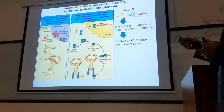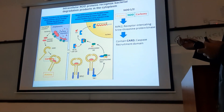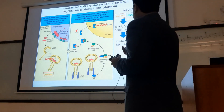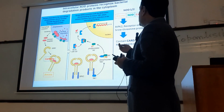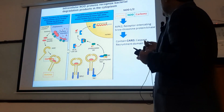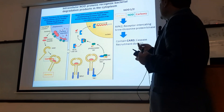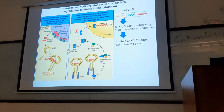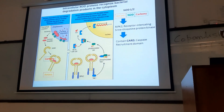NOD1 and NOD2 receptors have a similar structure with three domains: one is the amino domain, another is the carboxy domain on the carboxyl side, and the central domain is known as NOD — the nucleoside oligomerization domain — because this domain is responsible for making oligomers.